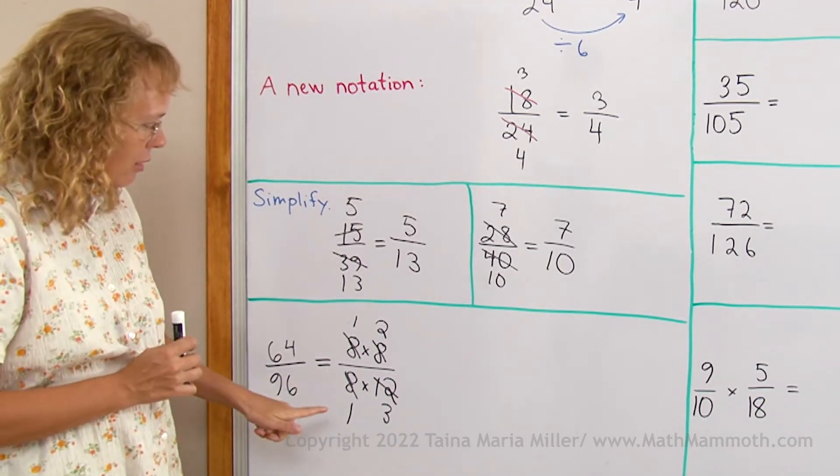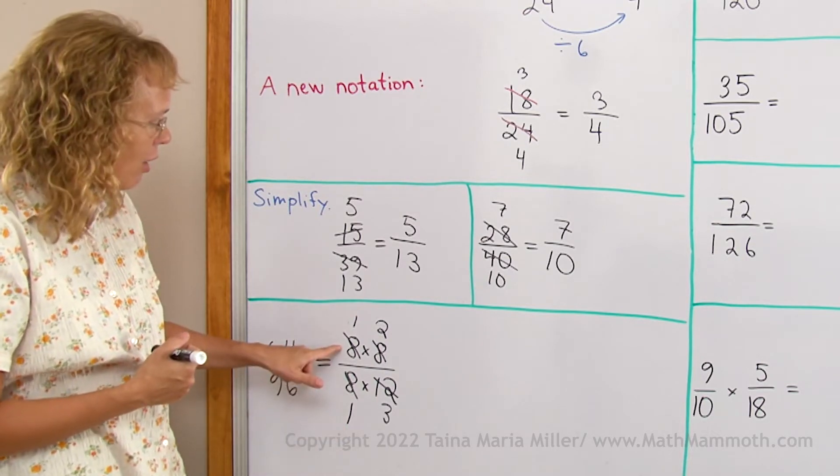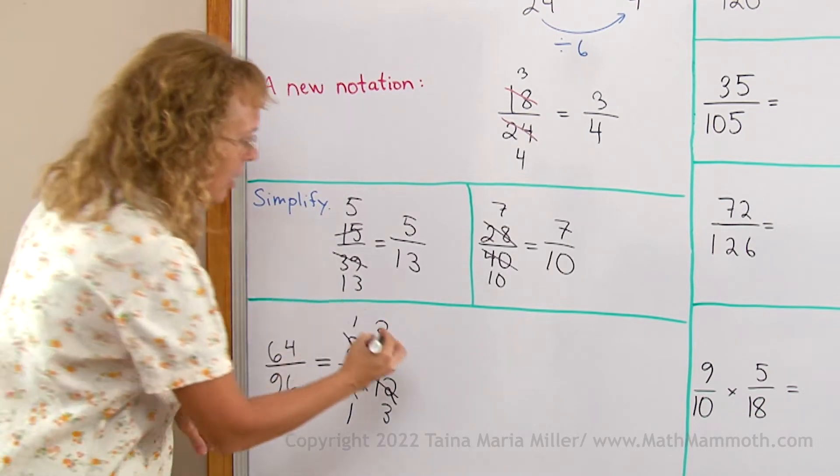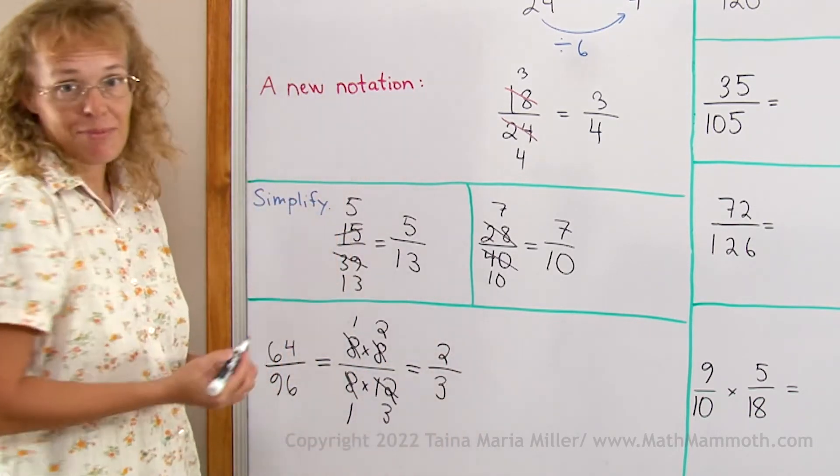So I will leave here 8 divided by 4 is 2, and 12 divided by 4 is 3. And now remember these are replacements for the numbers that are crossed out. So over here I actually have 1 times 2 and down here I have 1 times 3. So 1 times 2 is 2, and 1 times 3 is 3. All done.